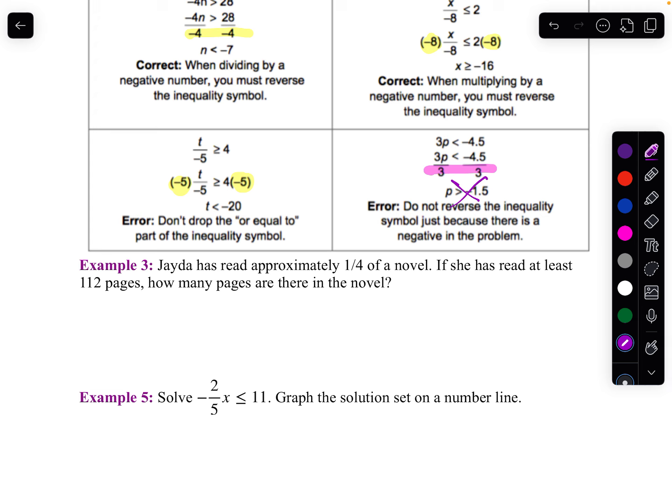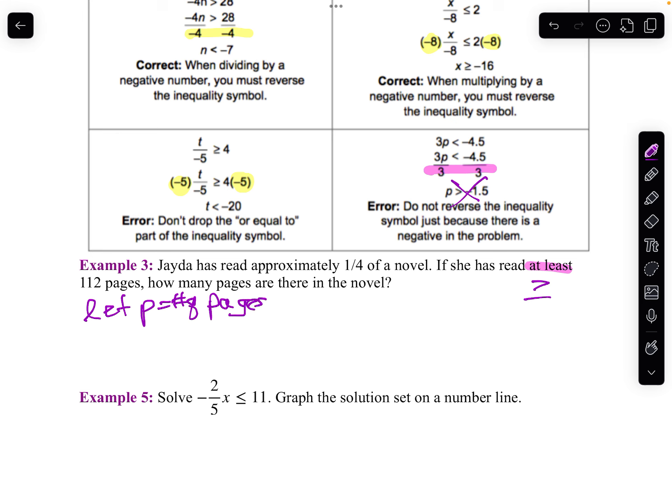Let's take a look at Jada. She's reading approximately one-fourth of a novel. She's read at least. What does at least mean? At least means greater than or equal to, because she's more than 112 pages. So in other words, I'm going to let P be the number of pages. So Jada has one-fourth of the total pages read. And that's greater than or equal to 112.